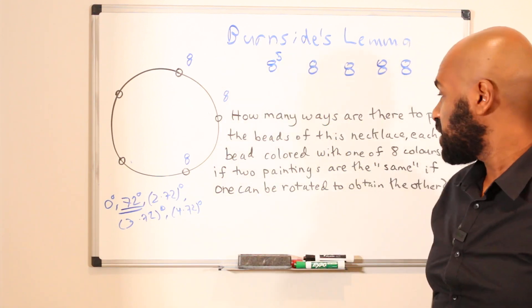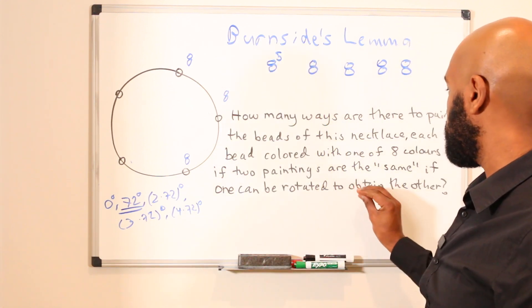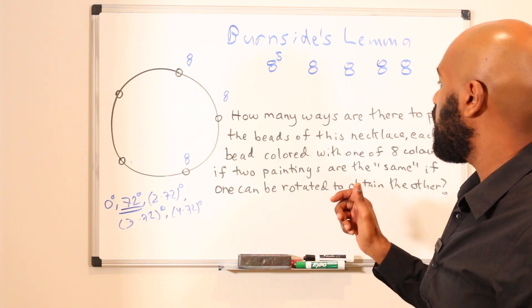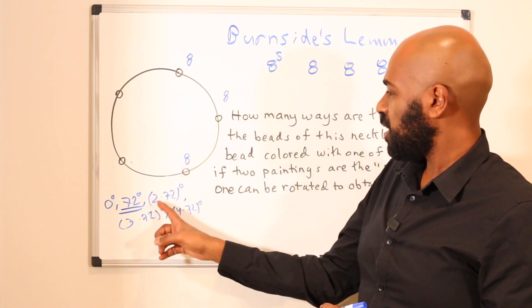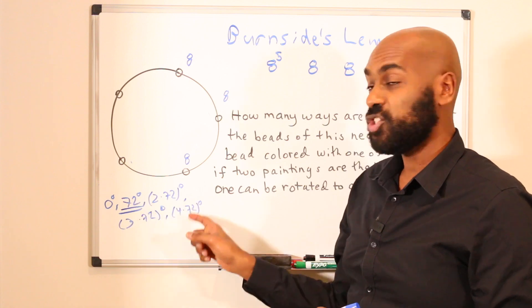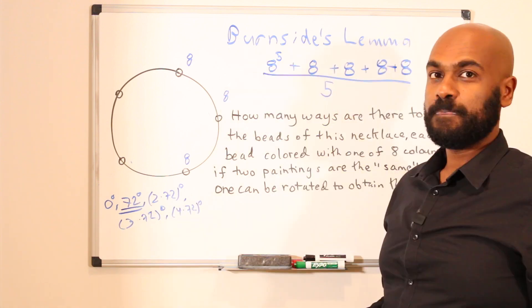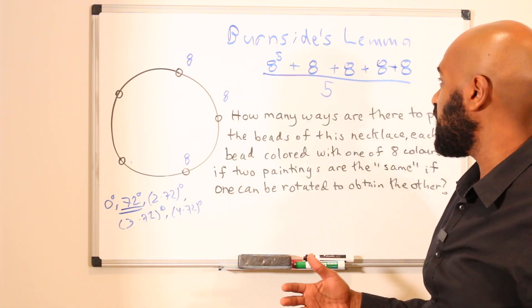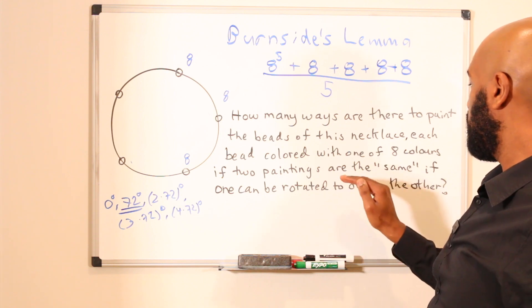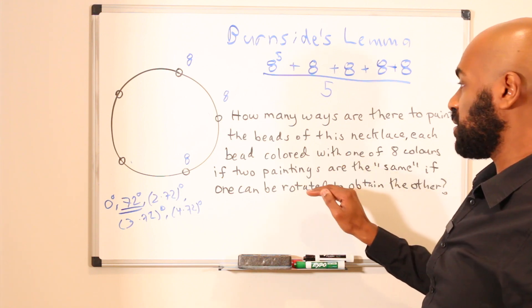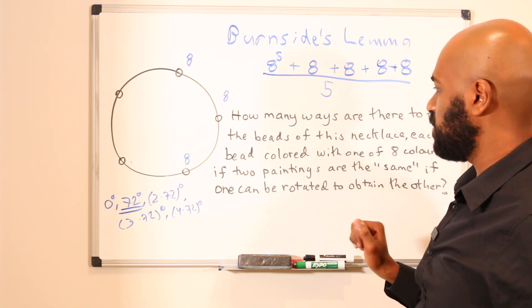So what Burnside's Lemma says is if you want to count the number of rotations up to symmetry, you count the number of colorings that are fixed under each of the rotations and take their average. And it turns out to be the same as the number of paintings up to rotational symmetry.